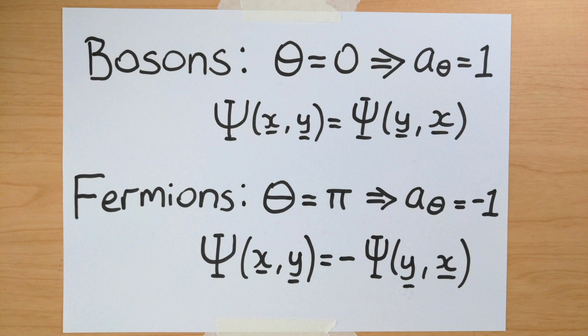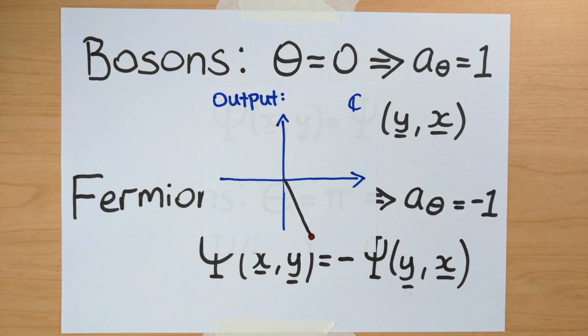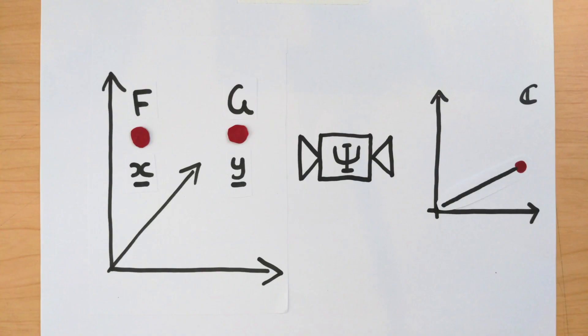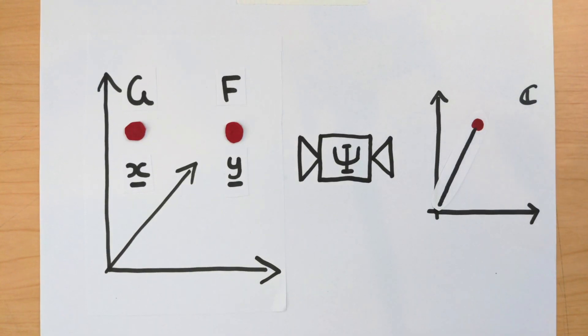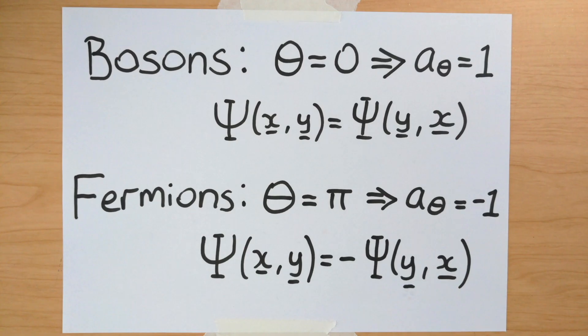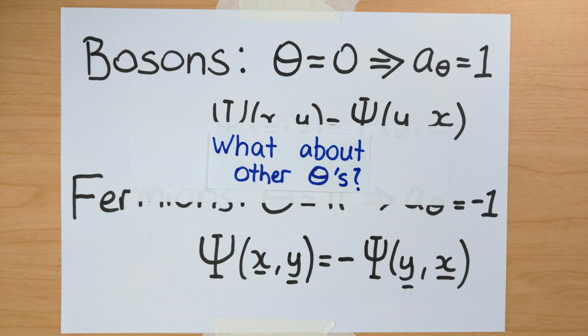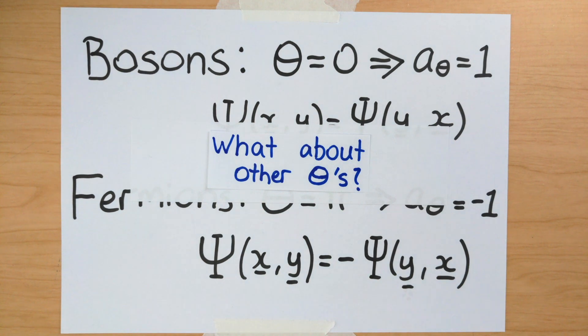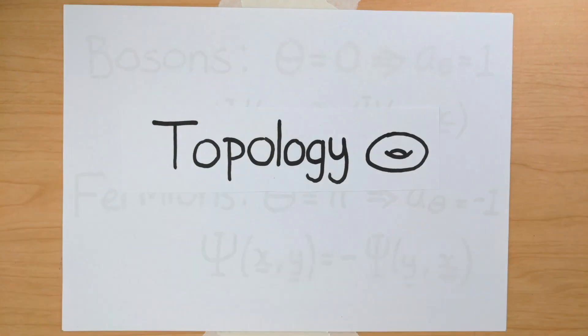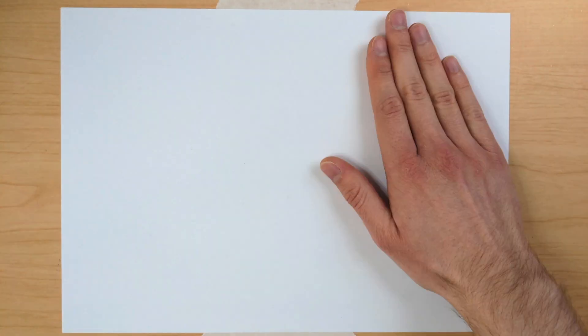But back to the main story. I just told you there were only two possibilities — fermions and bosons. But this is pretty mysterious. It seems like there should be a continuum of possibilities: swapping the inputs could rotate the output by any angle. So why are there only two types of particle? To explain this, we're going to need a better way of describing this quantum system of two particles, and in doing so, we're going to discover what topology has to do with all of this.